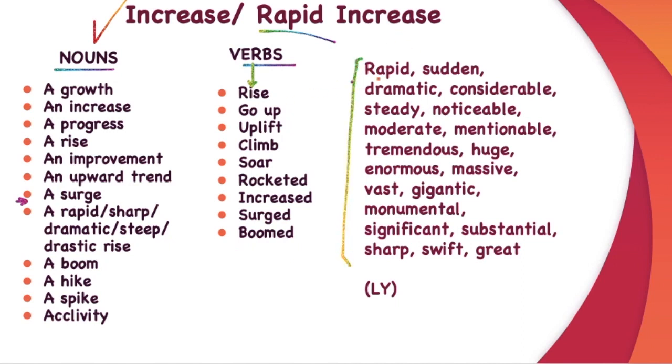These are some adjectives that you can use. What kind of growth is it? It is a rapid growth, sudden, dramatic, considerable, steady, noticeable, moderate, mentionable, tremendous, huge, enormous, massive, vast, gigantic, monumental, significant, substantial, sharp, swift, great. You can also play around with words by making the adjectives into adverbs by adding ly to these. So it increased rapidly, suddenly, dramatically, considerably, steadily, noticeably, moderately, mentionably and so on. This is going to be a great help to you.